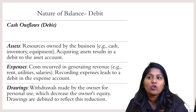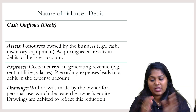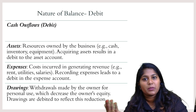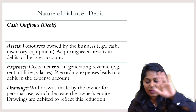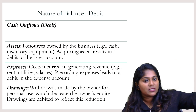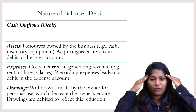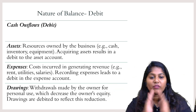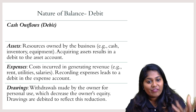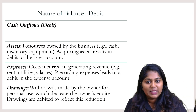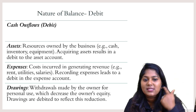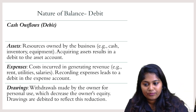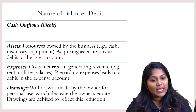So we have six different types of transactions: three will have a debit balance and three will have a credit balance. All cash outflows — money going from the business to another person — we call debit nature of balance, from the business's point of view, not the owner's. If the business has to give money to somebody, we call it debit nature of balance. If the business has to receive money from somebody, we call it credit nature of balance.